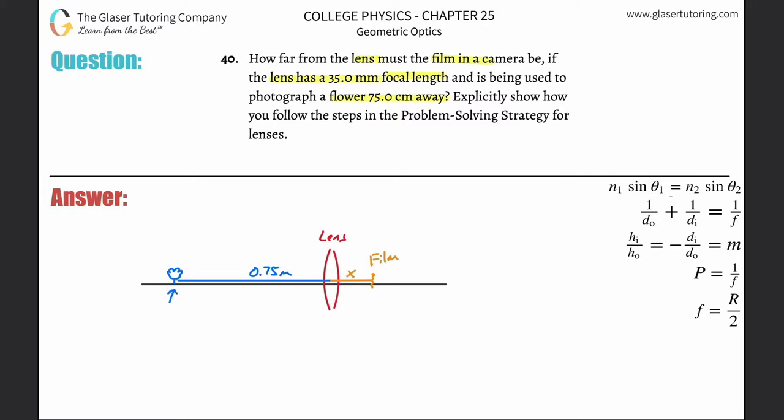Let's label a couple things. This is the flower, this represents the actual object - this is the object. And there will be an image of that object that is then created by the lens and going to be recorded by the film.